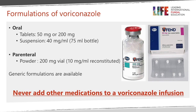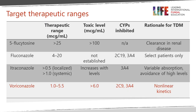Voriconazole comes as tablets — typically 50 or 200 milligram strength — but can also come as a suspension for oral use, and intravenous as a powder. There are some generic formulations available, although the original product was from Pfizer. The therapeutic range is recommended to be between 1 and 5.5, and toxic levels with a higher rate of hepatic and neurotoxicity are associated with levels above 6.